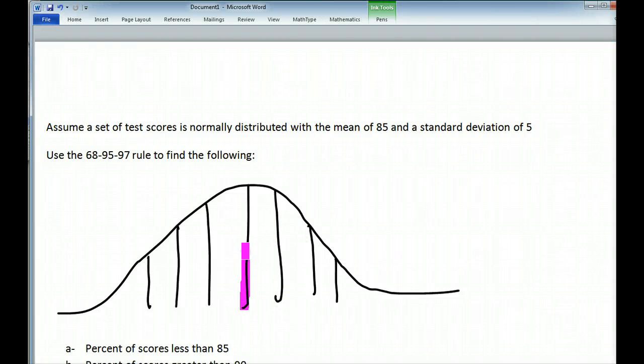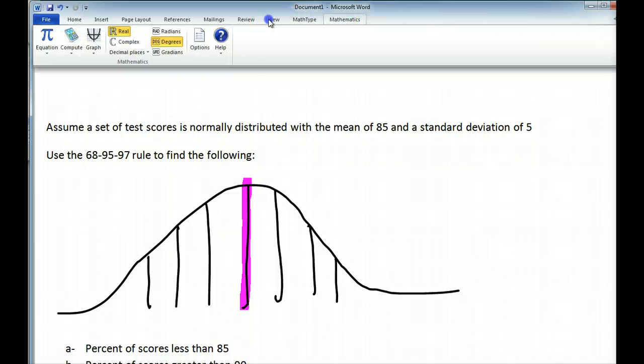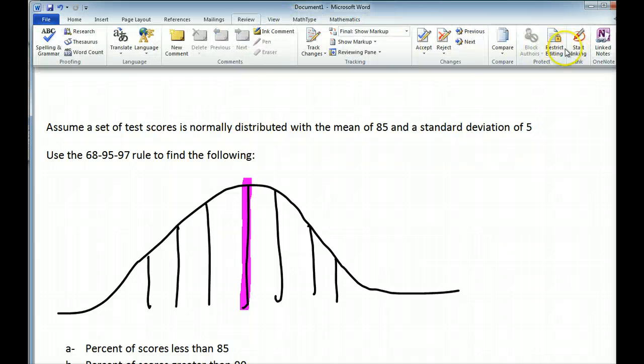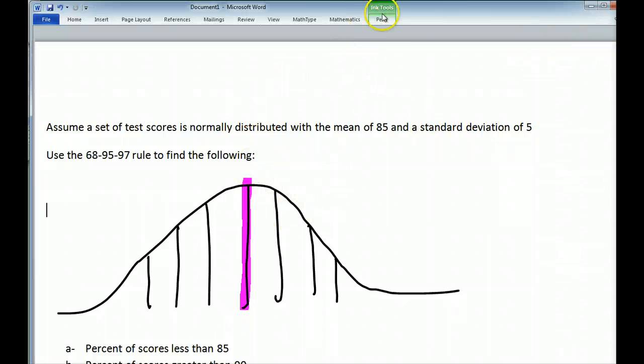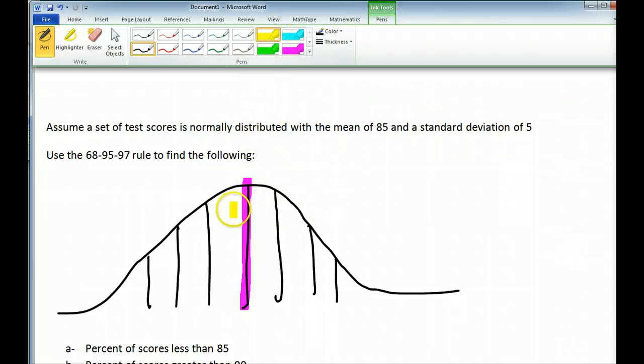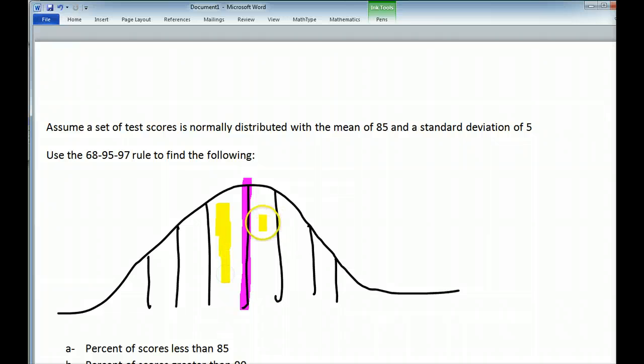I'm going to highlight the middle one pink to indicate this is the mean or the average. What this is saying is that 68% of the data falls within one standard deviation.